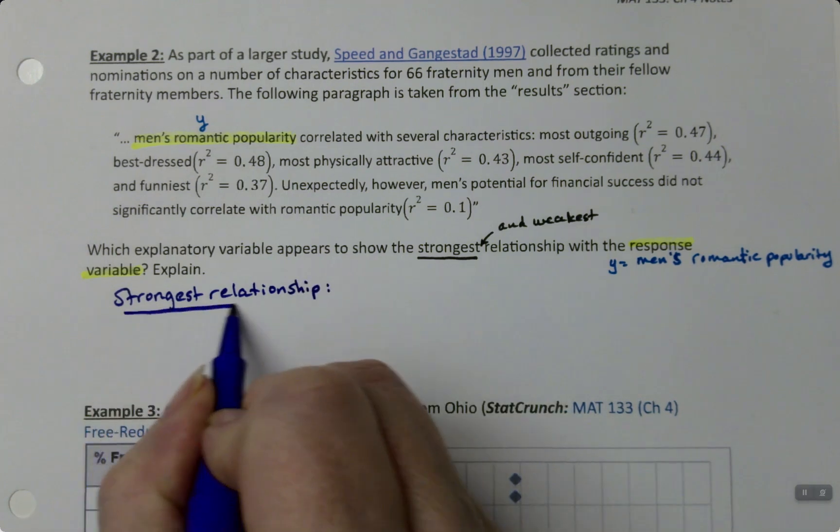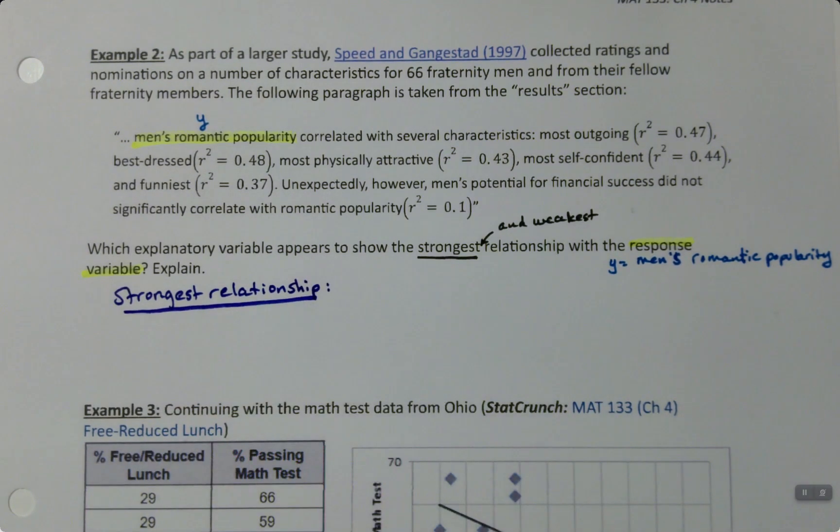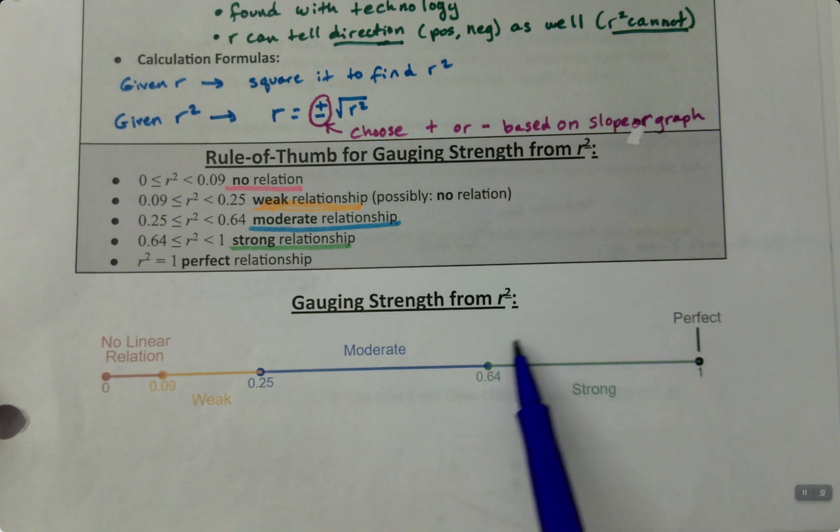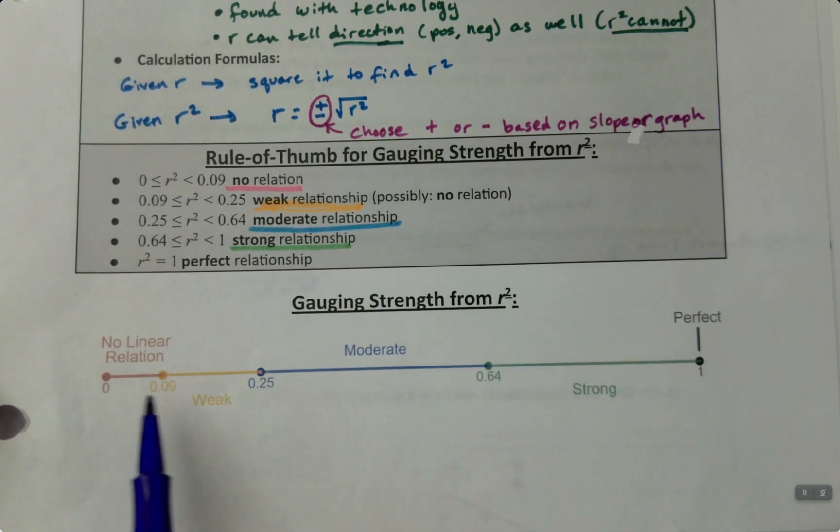The strongest relationship: you have to look through the list and figure out which has the strongest R-squared. That's how we measure strength—we measure strength with R-squared.